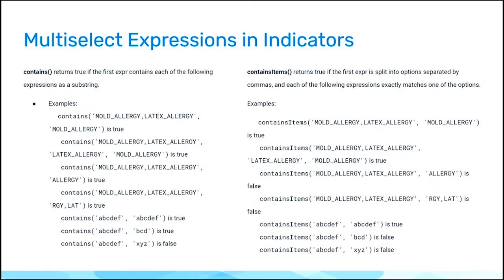So that's a lot of DHIS2 lingo. But essentially, we have 'contains' and 'contains in'. And if you're using these expressions, you can be saying, I want to see a program indicator that aggregates by these diseases — maybe presented to the end user as a drop-down option set — and aggregate or count by that.